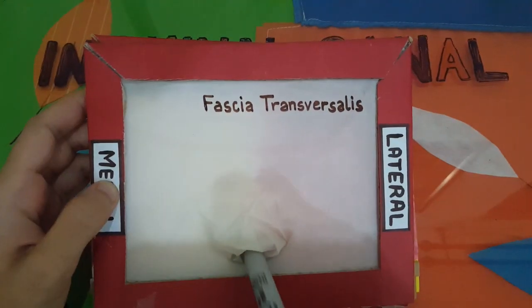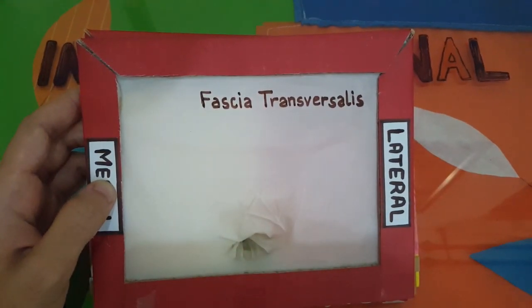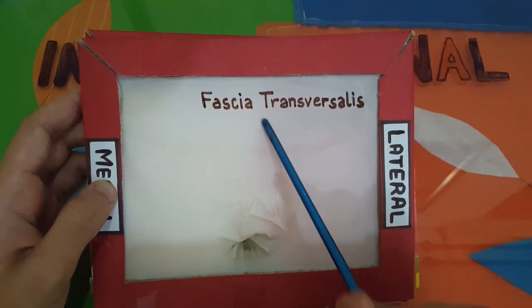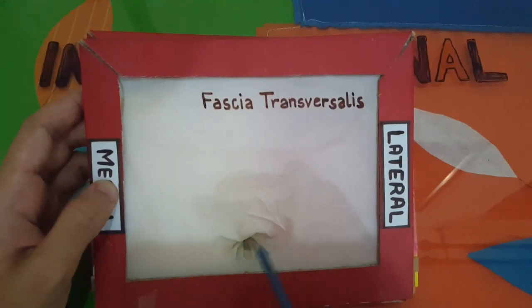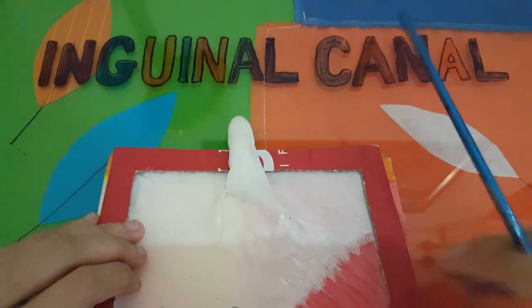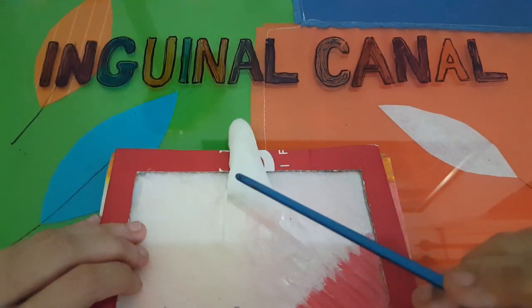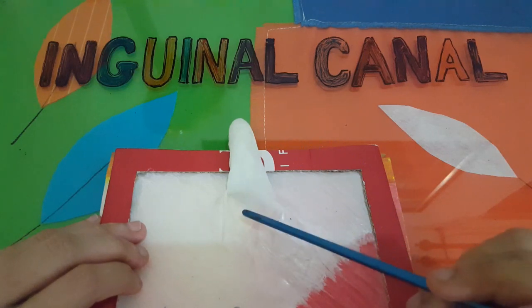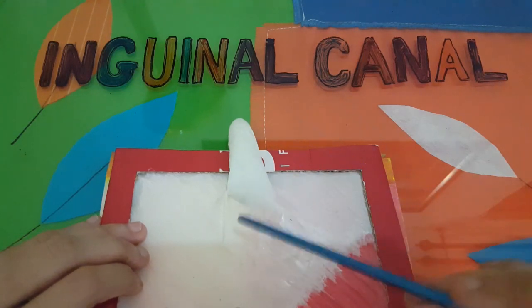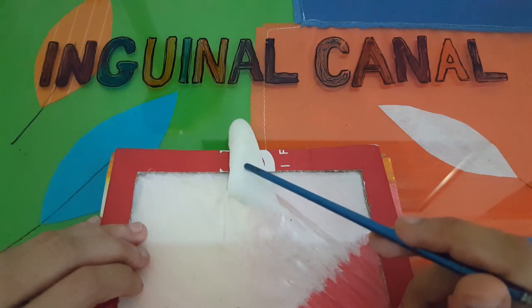The opening formed on the inner side is called the deep inguinal ring, and it is the junction of the fascia transversalis and the internal spermatic fascia. On the outer side, the opening through which the spermatic cord emerges is called the superficial inguinal ring, and it forms the junction of the external oblique aponeurosis and the external spermatic fascia.